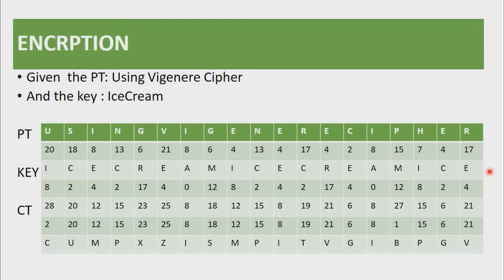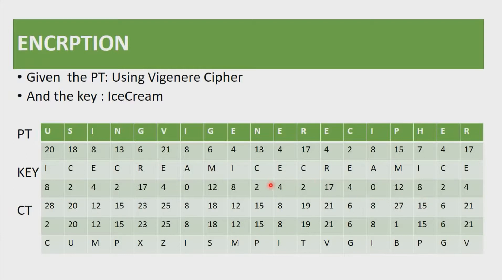Just as with the plain text, we also encode the key using mod 26. So in this row we have encoded the key elements numerically. Now to encrypt the text, all we have to do is add the plain text elements and the key. So 20 plus 8 gives us 28, and 18 plus 2 gives us 20. In this row we are simply adding the numerical values of the plain text and the numerical values of the key.